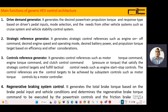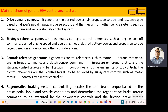The second function is the strategic reference generator. It generates strategic control references such as engine on/off command, desired engine speed and operating mode, desired battery power, and propulsion torque target based on efficiency and other considerations.